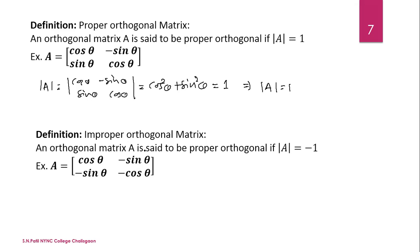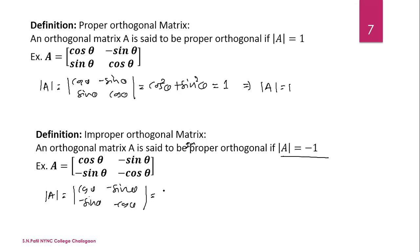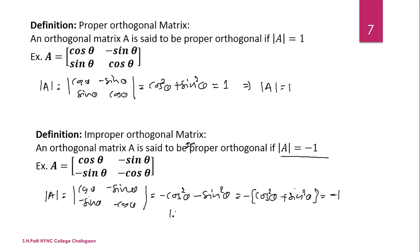Similarly, an improper orthogonal matrix: an orthogonal matrix A is said to be improper orthogonal if the determinant of A is minus 1. For the matrix with entries cos theta, minus sin theta; minus sin theta, minus cos theta: the determinant gives cos squared theta minus sin squared theta — wait, expanding gives minus cos squared theta minus sin squared theta, which equals minus 1 times (cos squared plus sin squared), giving determinant equal to minus 1. Hence it is improper orthogonal.